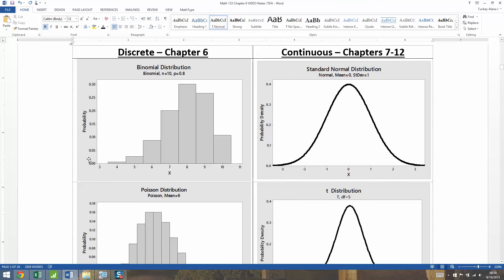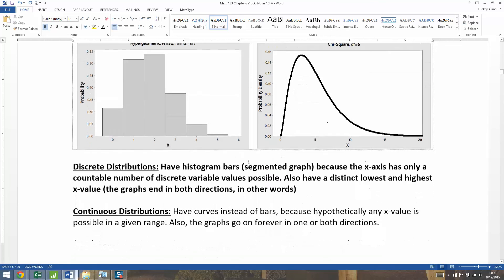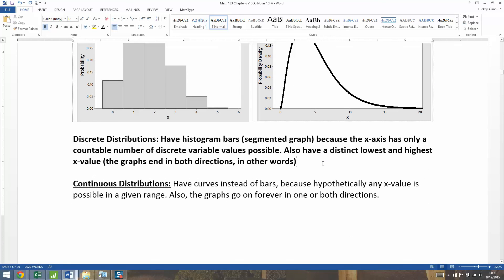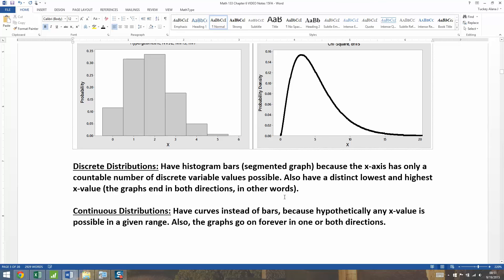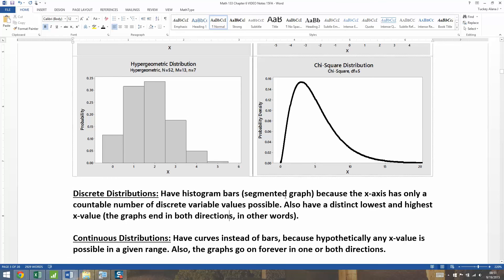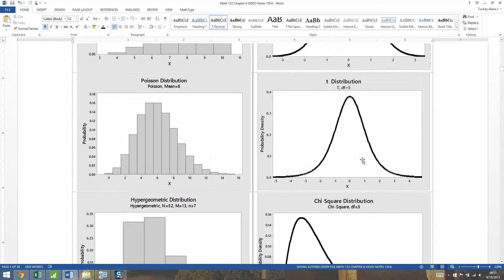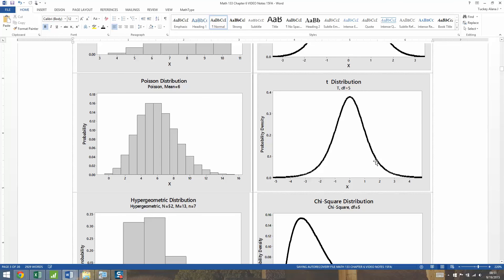Continuous distributions are not that way. The continuous distributions all have curves instead of bars, because hypothetically any x value is possible in a given range. If you look at this one, x could be anywhere from one to two. Over on the left it could either be one or two, that's it. But over here on the right it could be 1.23642 - that's possible. So you have this continuous curve drawn.